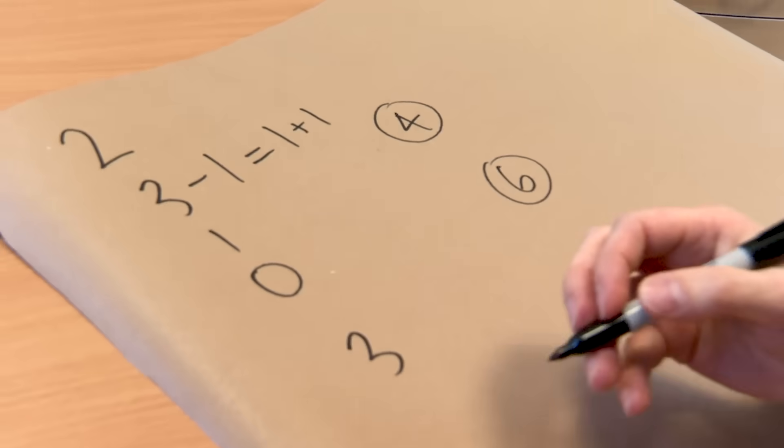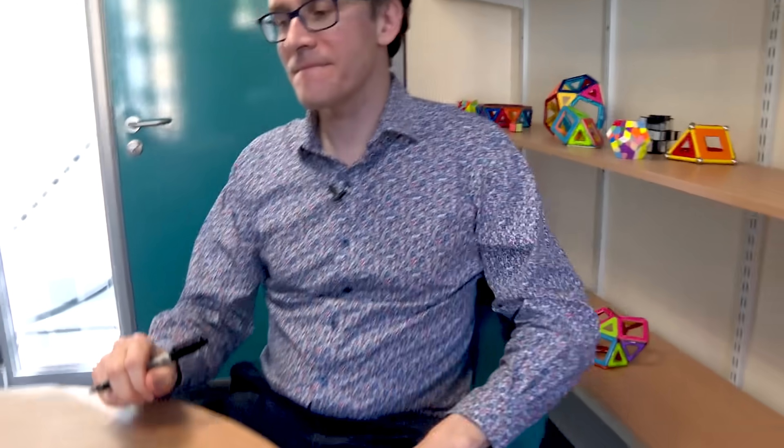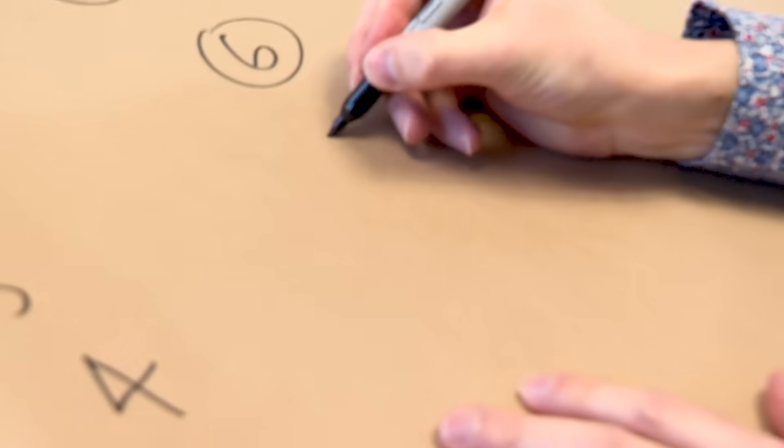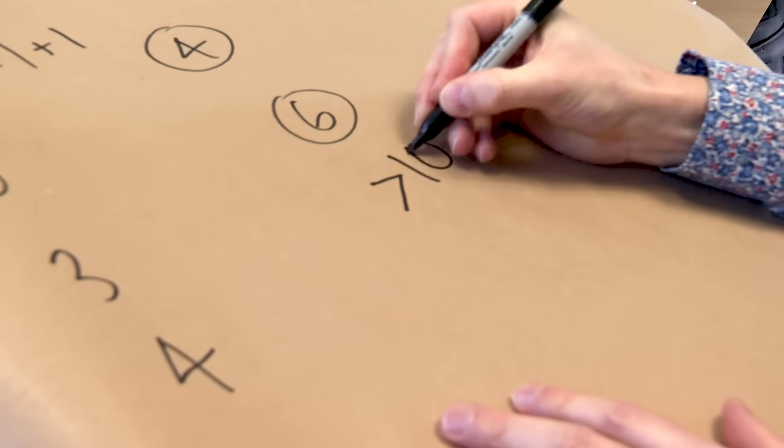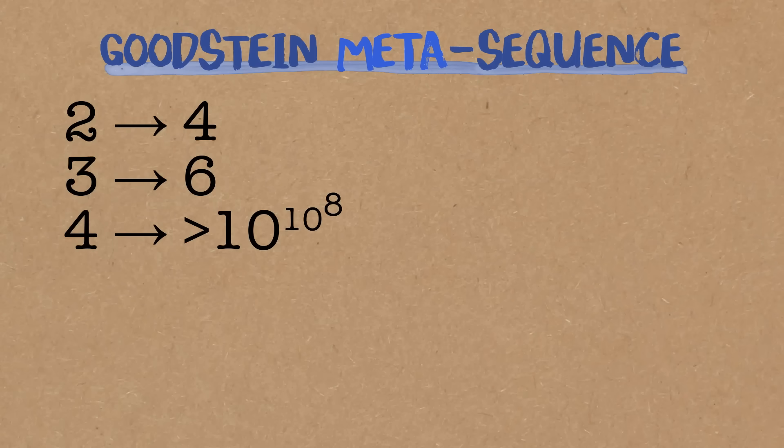If we start on 4, how big is it going to be? Any guesses? 2 to the 2. I don't know. I guess about, like, 10 or 12? It's a natural guess. It's not quite right. If we start on 4, the length of the Goodstein sequence is bigger than 10 to the power of 10 to the 8. So that's 10 to the power of 100 million. That's the length of the sequence. Before it hits 0, it takes more than 10 to the power of 100 million steps. I was quite wrong. That's insane! It is surprising. It's really surprising.